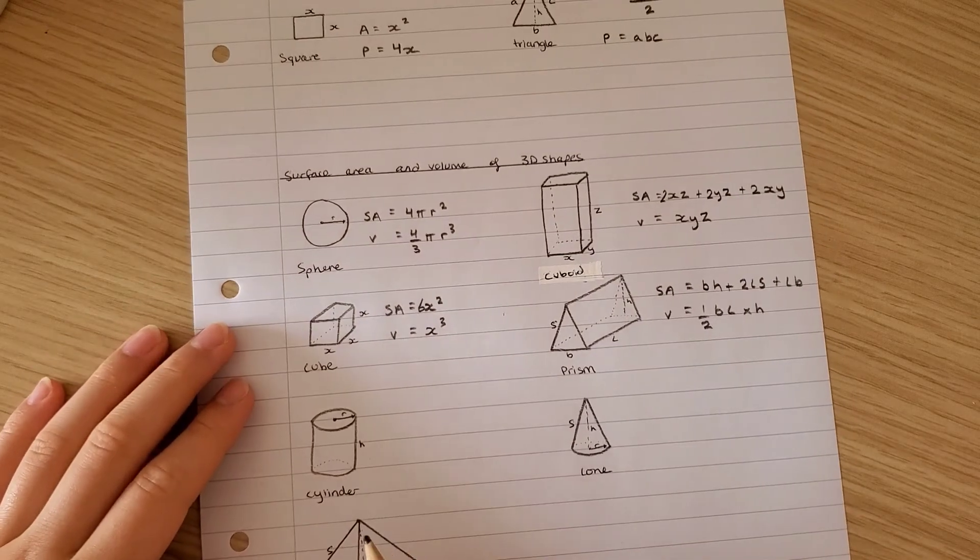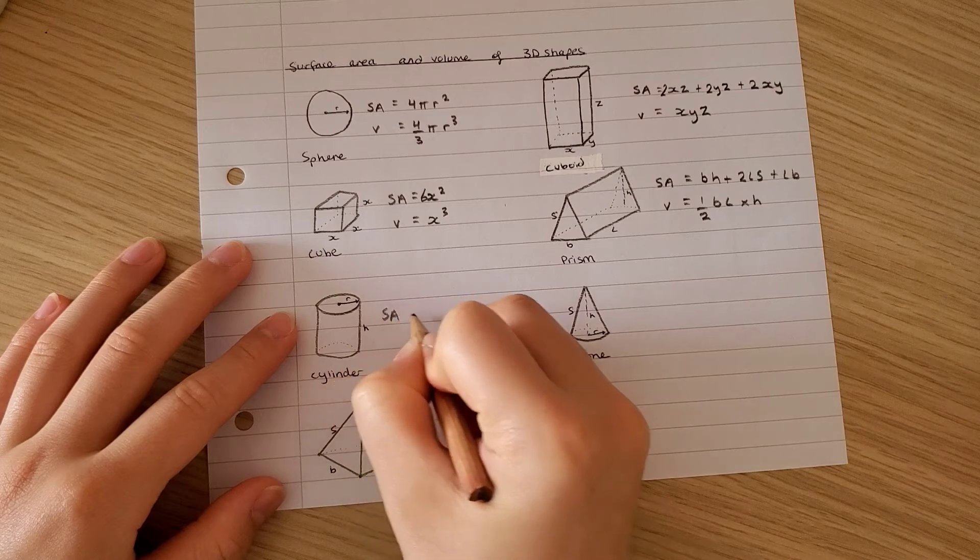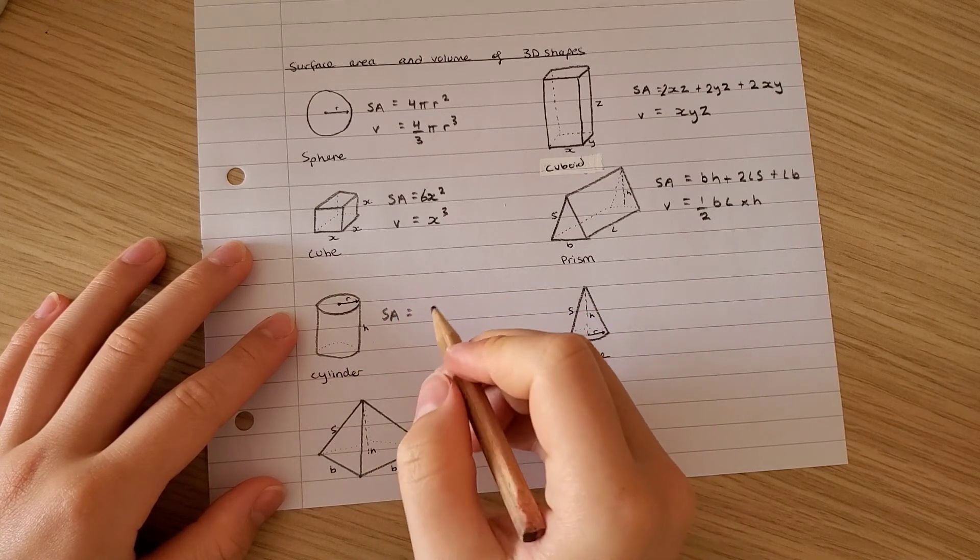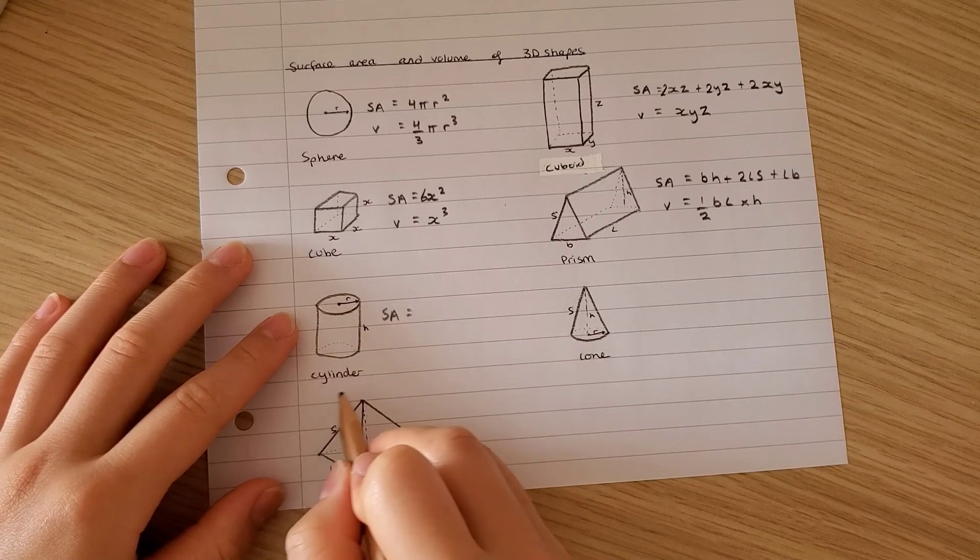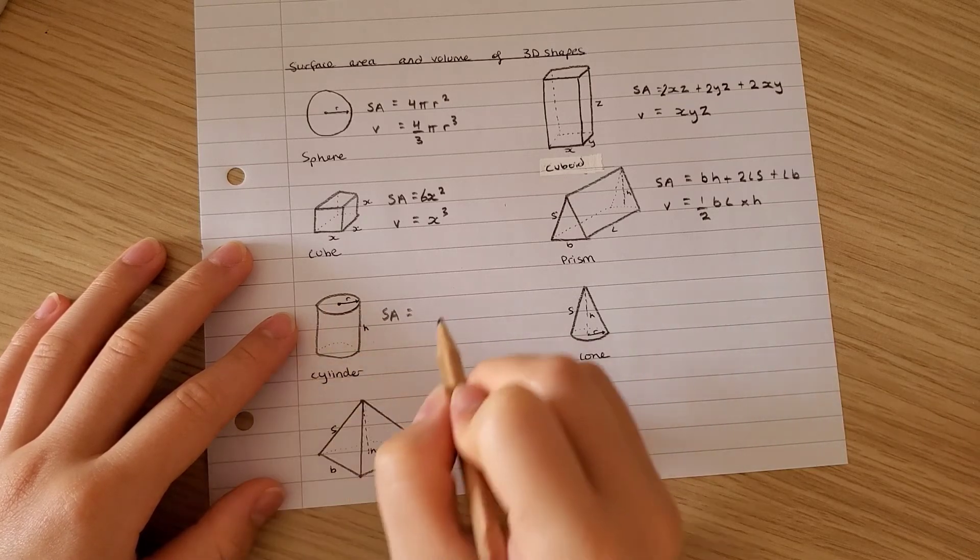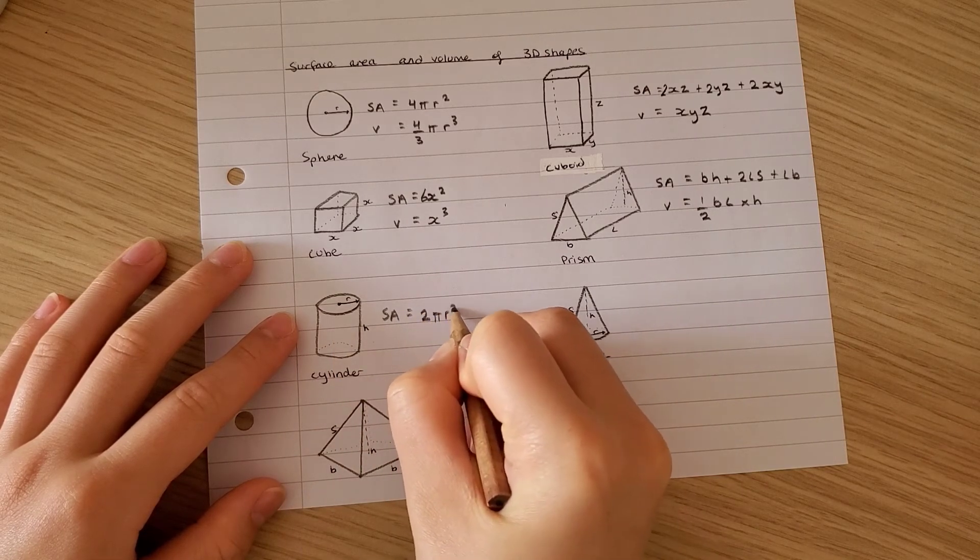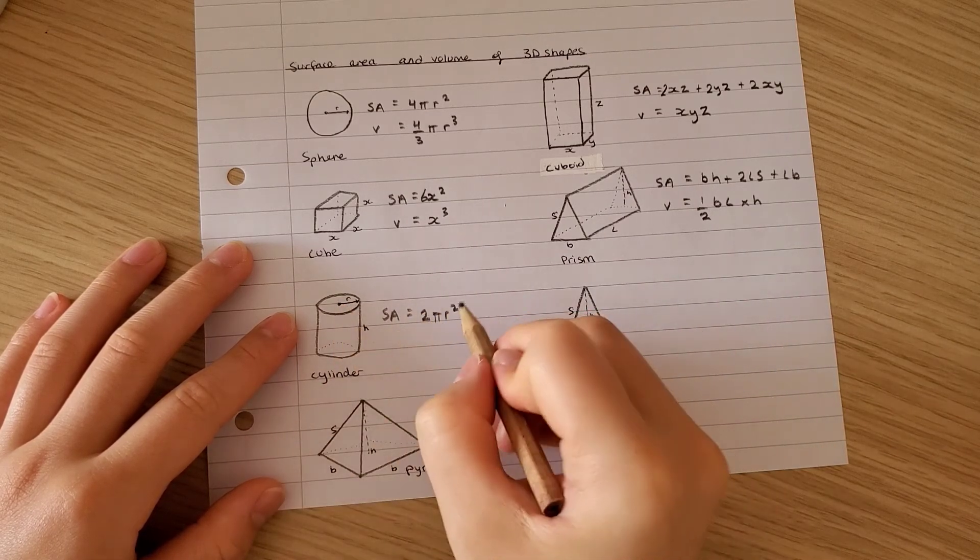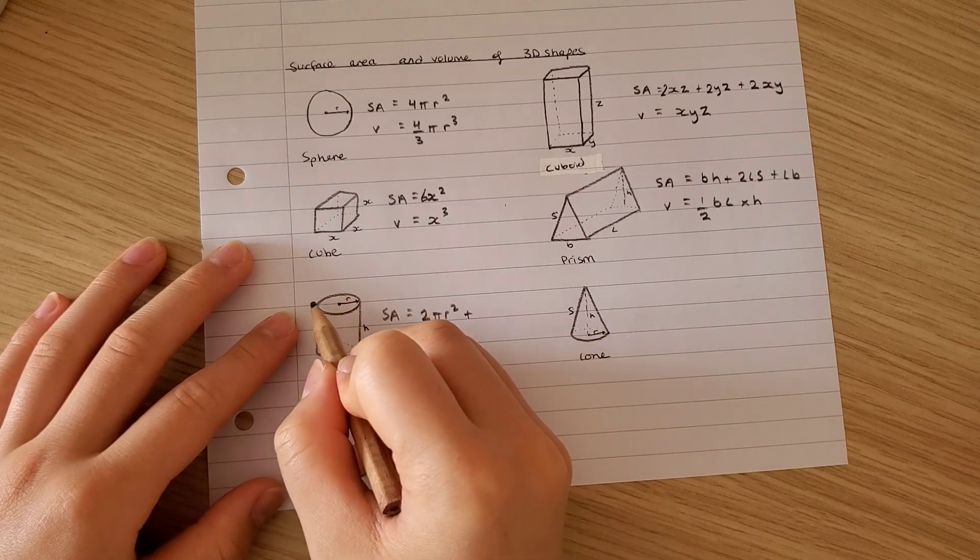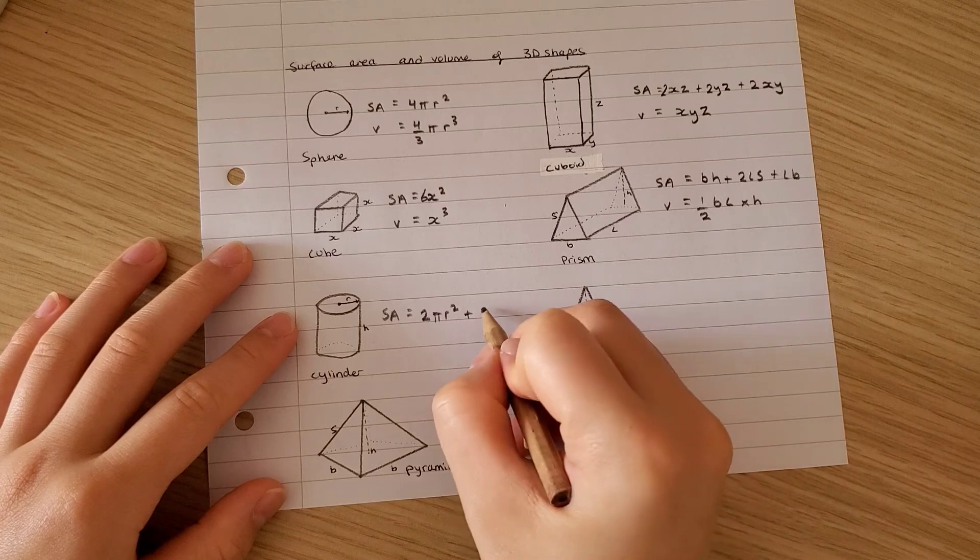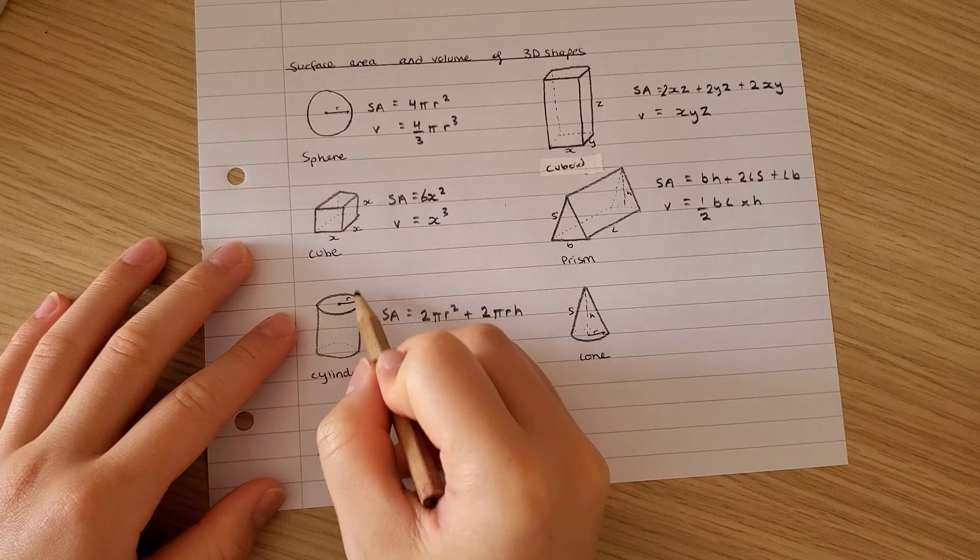For a cylinder, the surface area: if you take into account the top circle, bottom circle, and then this sheet that almost goes around it, so you have 2 pi r squared for the top and the bottom. And then you need the diameter, which is equivalent to 2r. So to find that is 2 pi r h, where h is the height.